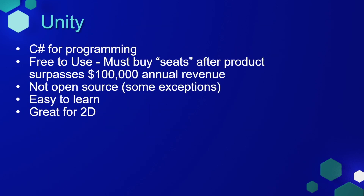Unity is another game engine, which we're going to cover in section 2 of this course. It uses C Sharp for programming. It's free to use, but you must buy seats after your product surpasses $100,000 in annual revenue. Each seat isn't that expensive — at the time of recording this, it was around $400 per seat per year.